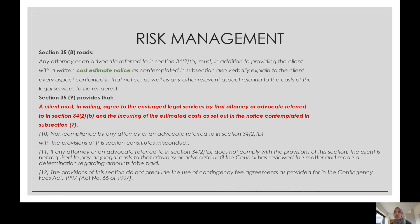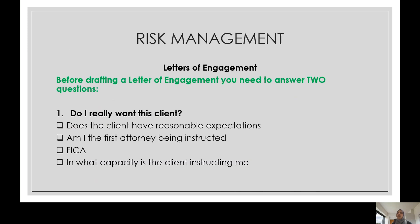In terms of section 35.8 of the LPA, an attorney must provide a cost estimate to his client at the outset with regards to the matter and instruction received. It is always difficult to estimate what the costs are going to be, but it is important to articulate this to your client. You can always amend this as the matter progresses — it can be a living document. But before you even draft the letter of engagement, there are two very pertinent questions you should answer.